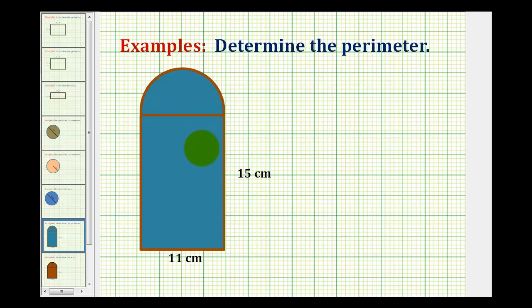We want to determine the perimeter of the given figure, which would be the distance around the outside, and notice how three of the sides would be the sides of a rectangle.